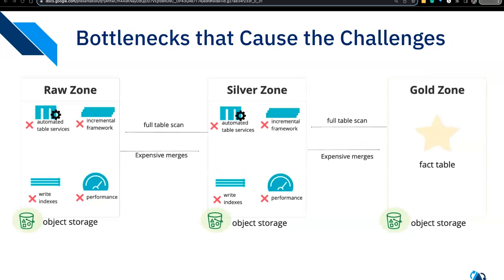In each zone the same services are repeated. Automated table services: many technologies don't offer fully automated table services to manage your data and maintain your table's health. In Spark you might have to run manual compaction — merging smaller files into larger ones — to improve query performance. You might also have to run cleaning services. However, if you need to run two services at the same point, you have to implement your own optimistic concurrency control mechanism.